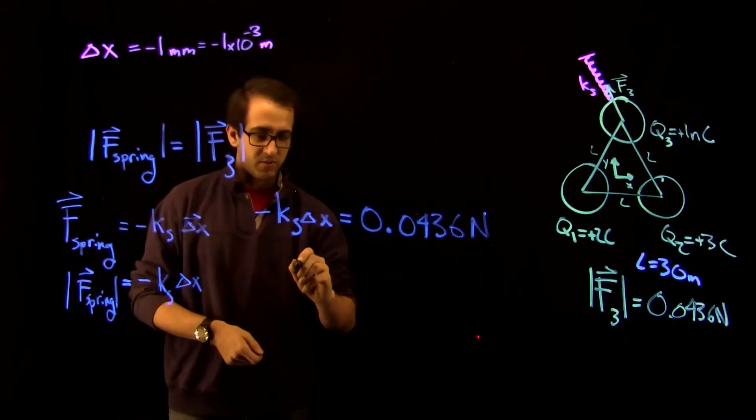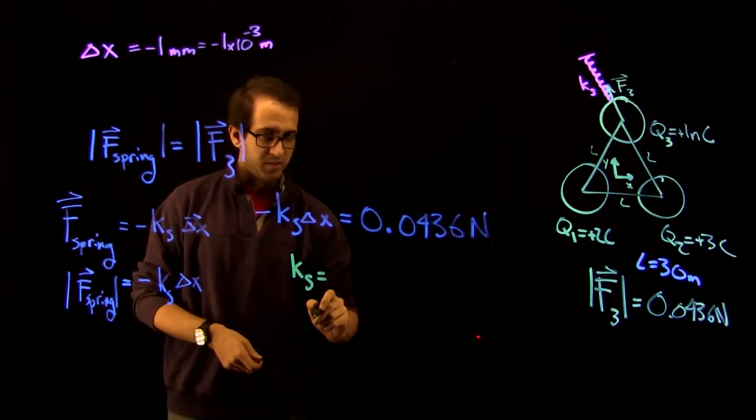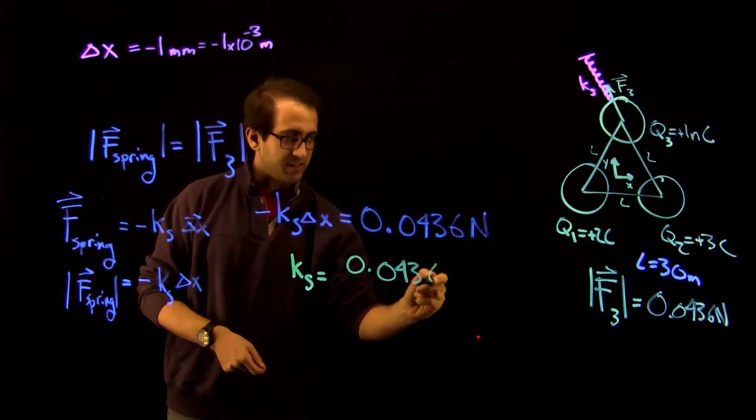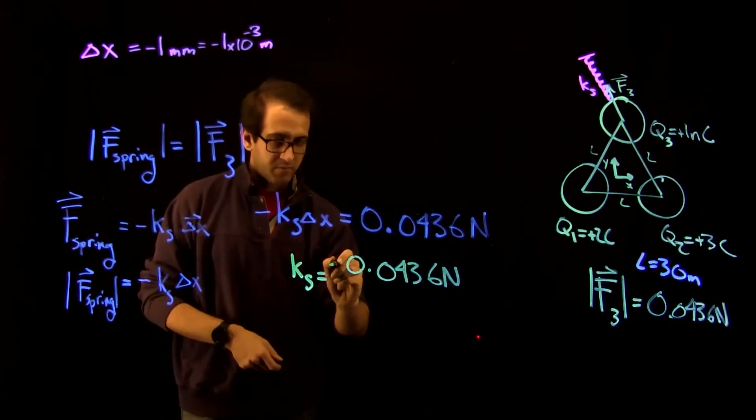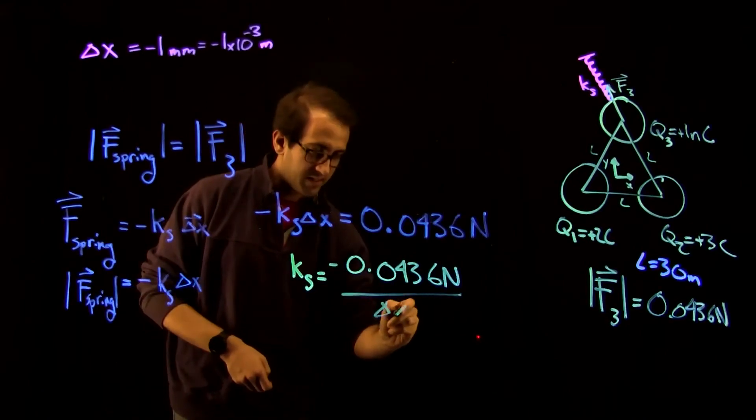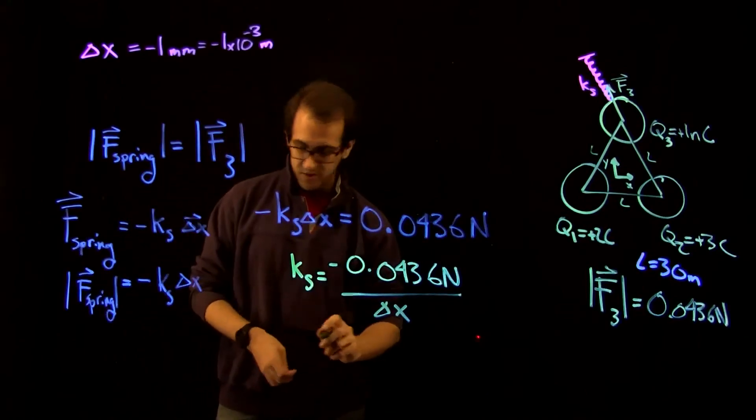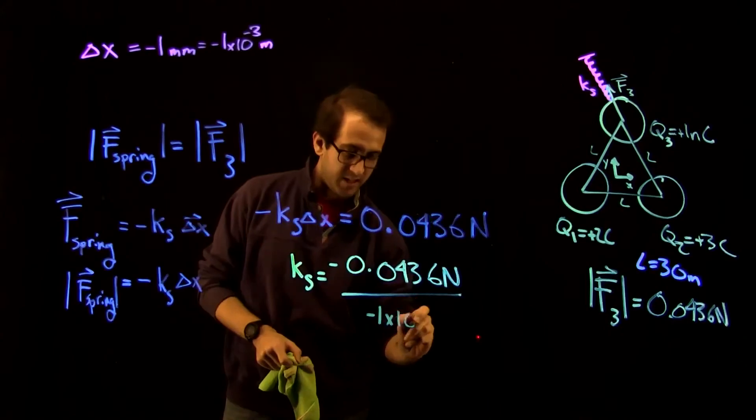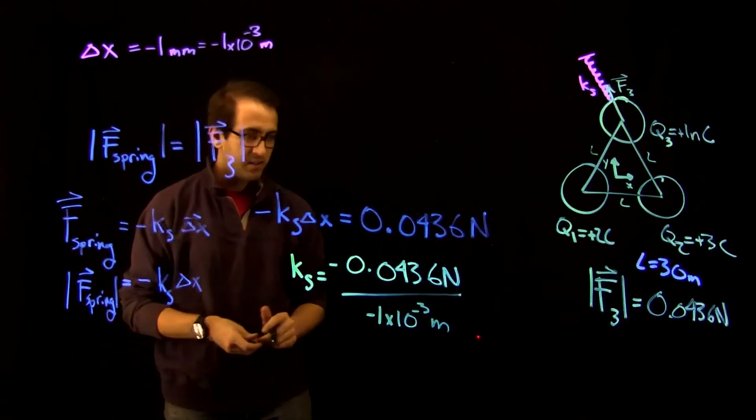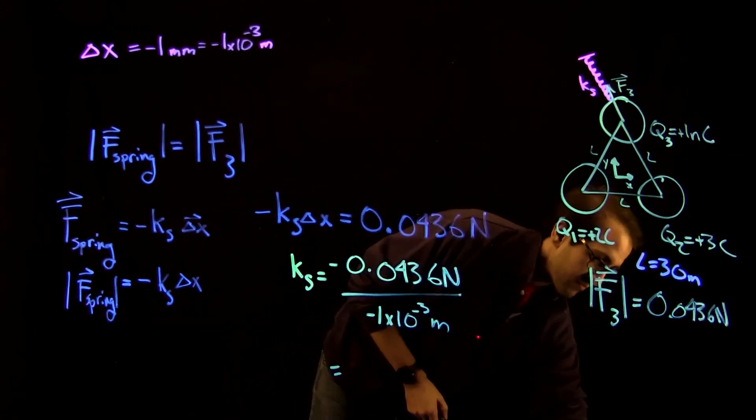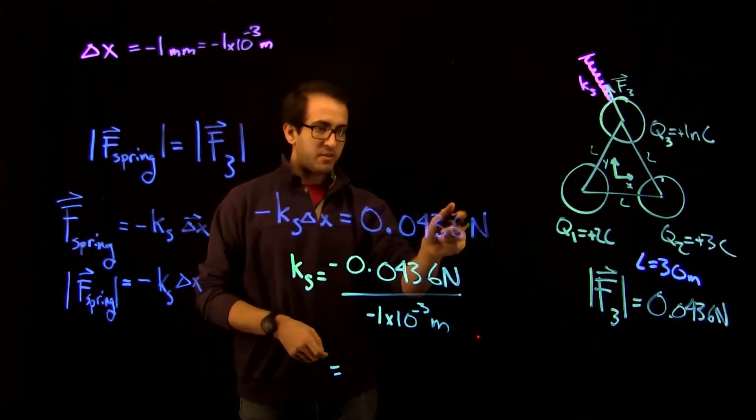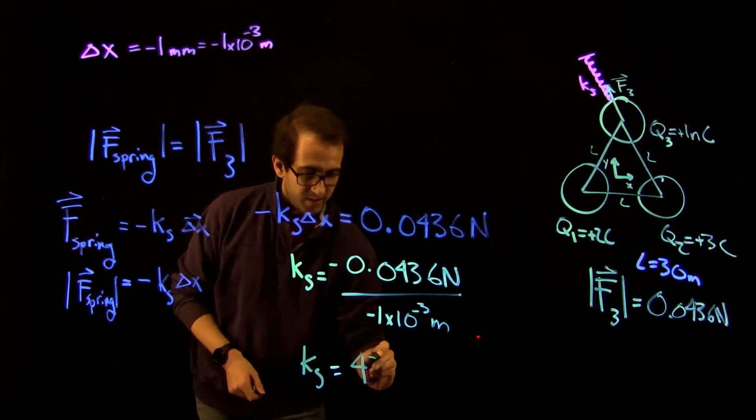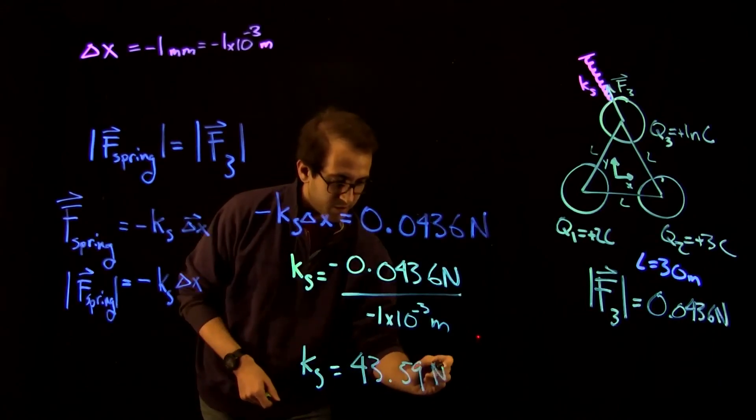Let's rearrange. So if we're looking for Ks is equal to 0.0436 newtons, bring the minus sign over to that side, over delta X. But delta X is just minus one times ten to the minus three meters. So I can put this into a calculator and solve. And what we find, this has been a bit of rounding here in the last place, but spring constant Ks is equal to 43.59 newtons per meter.